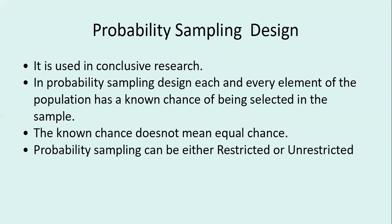What is probability sampling design? Probability sampling design is used in conclusive research and is used across all types of populations. In probability sampling design, each and every element of the population has known chances of being selected as a sample — known chances, though not necessarily equal chances.